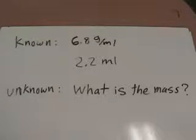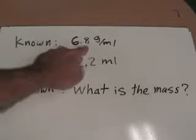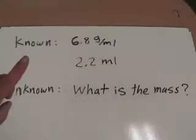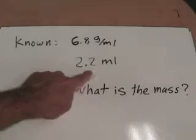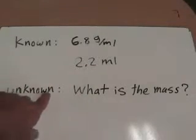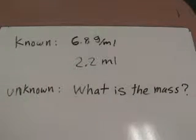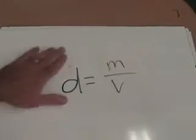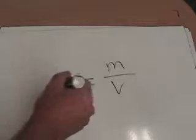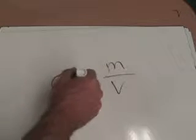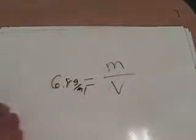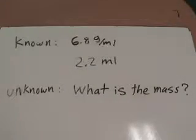Now, if instead our knowns were 6.8 grams per milliliter, which is density, and 2.2 milliliters, which is volume, and we're asked to find what is the mass, the way we'd approach it is, we would substitute in 6.8 grams per milliliter for density, and we would substitute in 2.2 milliliters for volume.